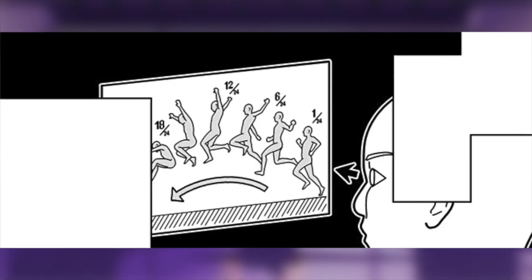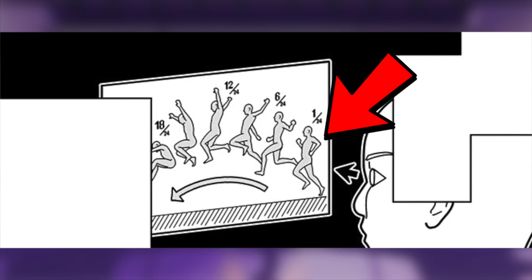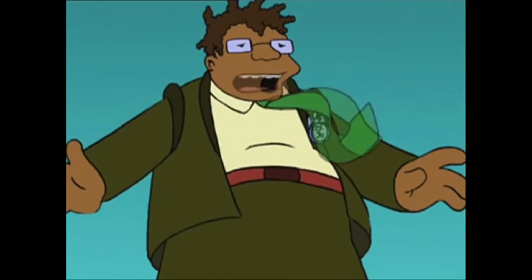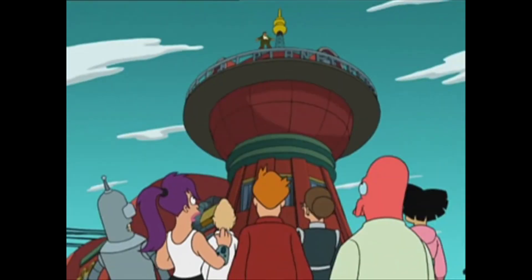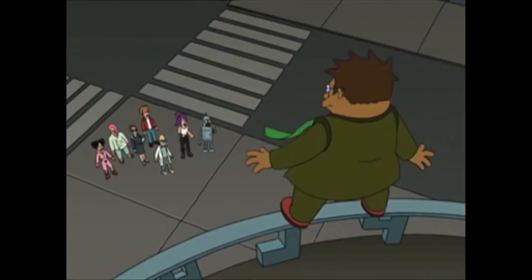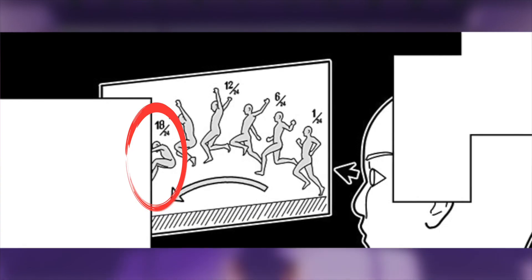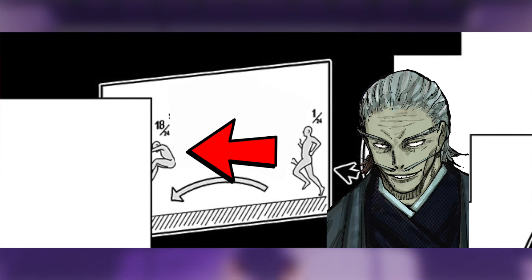The easiest way to understand this is with the actual manga panel used to explain the technique. We see here that in frame 1 out of 24, this person is just about to jump. And by frame 18, they're already about to land. So if this was Naobito, he could pretty much skip directly to the 18th frame without having to do any of the other movements.